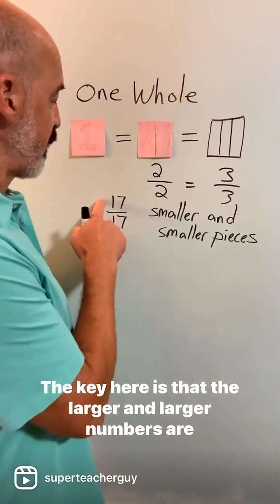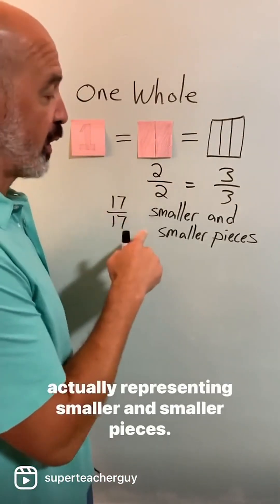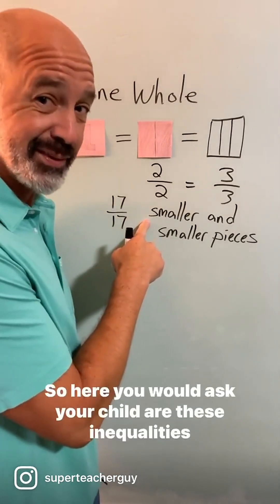The key here is that the larger and larger numbers are actually representing smaller and smaller pieces.